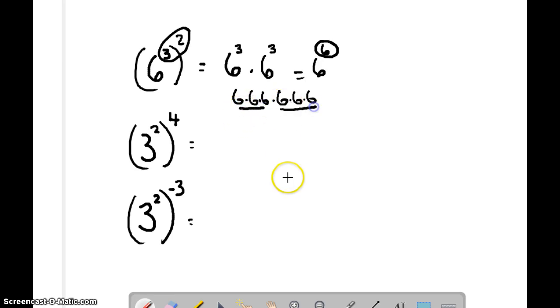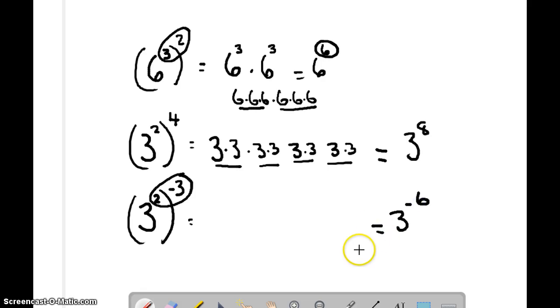Remember, when in doubt you can always write it out. So 3 squared to the 4th, the shortcut would say 2 times 4 is 8 and we'd come up with an answer. But if we want to double check, we would go 3 squared, which is 3 times 3, and how many of those are we going to do? We're going to do that 4. So 4, that's 2, that's 3, and that's 4. And we have 1, 2, 3, 4, 5, 6, 7, 8. So 3 to the 8th. Shortcut says 2 times negative 3 is 3 to the negative 6.